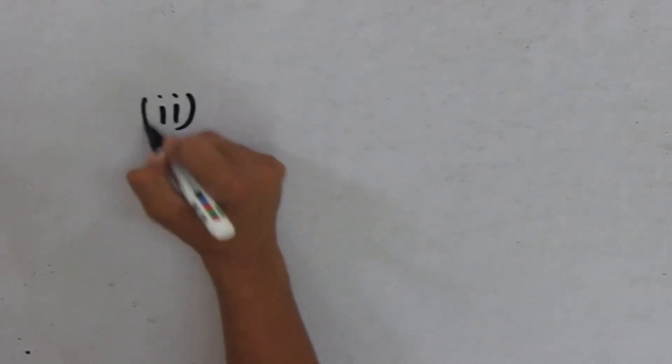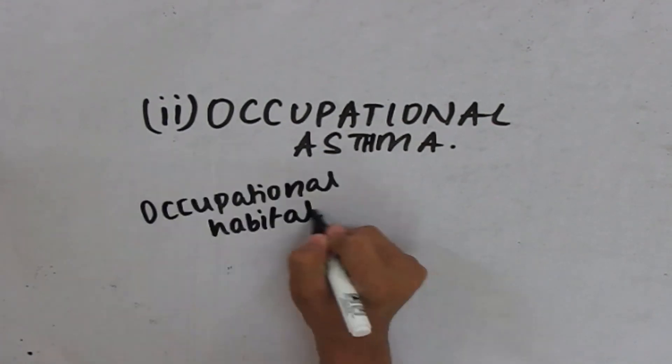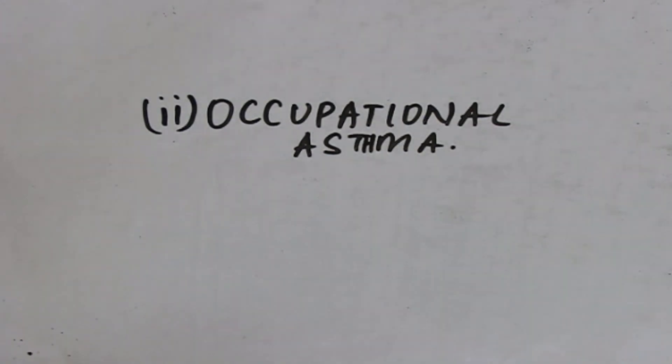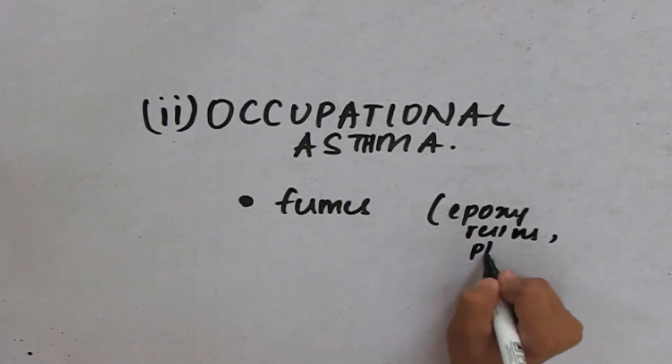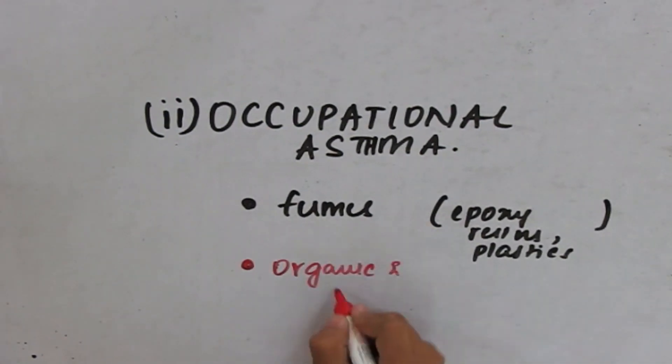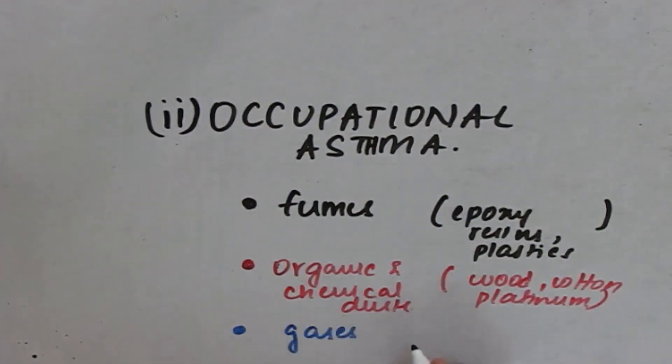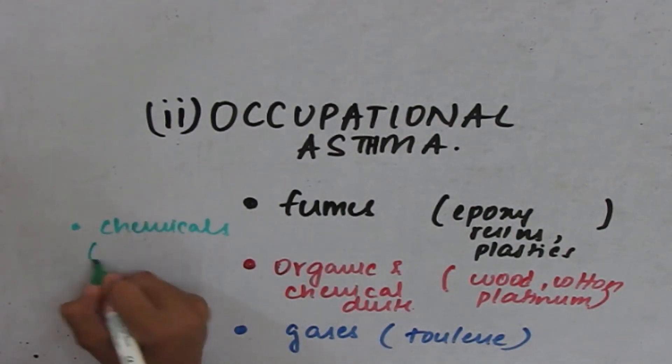The next one is occupational asthma. In this patient, the occupational habitat, that is the place where these people work, will be the cause of triggering asthma. The usual triggers in the occupational site are fumes such as epoxy resins and plastics, organic and chemical dusts such as wood, cotton, and platinum, gases such as toluene, and chemicals such as formaldehyde and penicillin products.